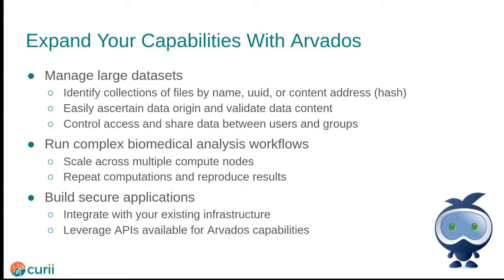The key capabilities that Arvados gives you are the ability to manage storage and compute at scale, and the ability to integrate those capabilities into your existing infrastructure and applications using Arvados APIs. The main unit of data management is an Arvados collection, which is a self-contained set of files and directories. A collection can be identified by a name assigned by the user, by a universally unique database identifier, or by a portable data hash, also called a content address.